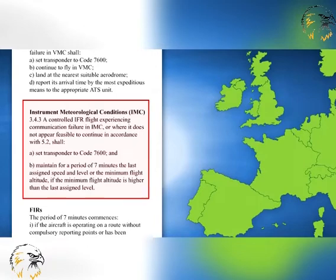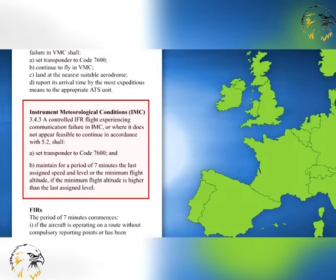The 7 minutes is based upon the latest of the following times: the time the aircraft reached its assigned level, or, if there was no assignment before the radio failed, the time the minimum flight altitude was reached; the time 7600 was set; or the time the crew were unable to report position over a compulsory reporting point. The remainder of the procedure is the same as the IMC non-radar airspace SOP discussed previously.